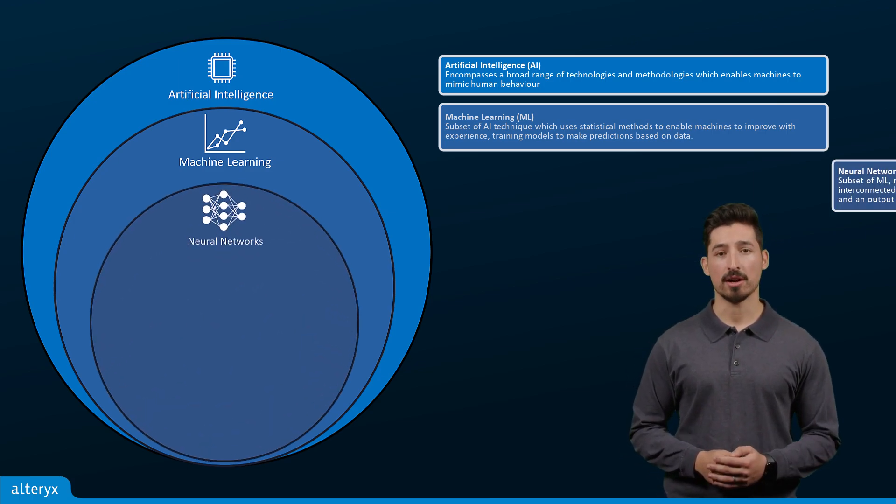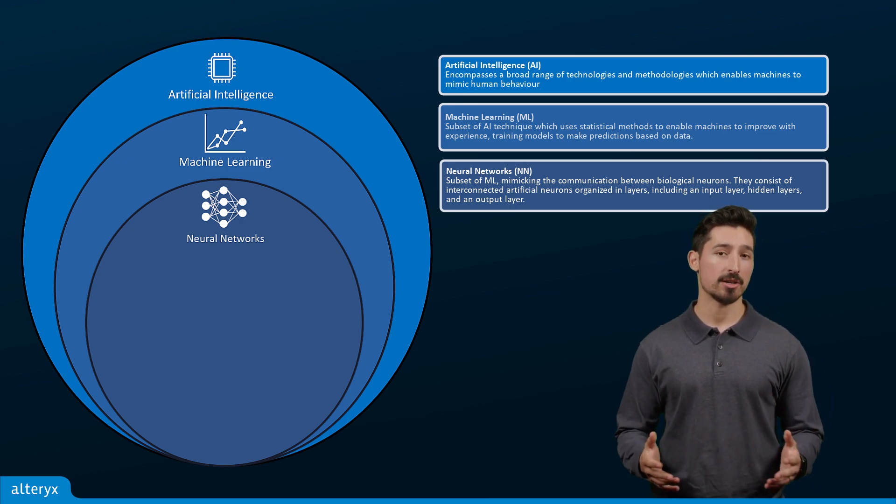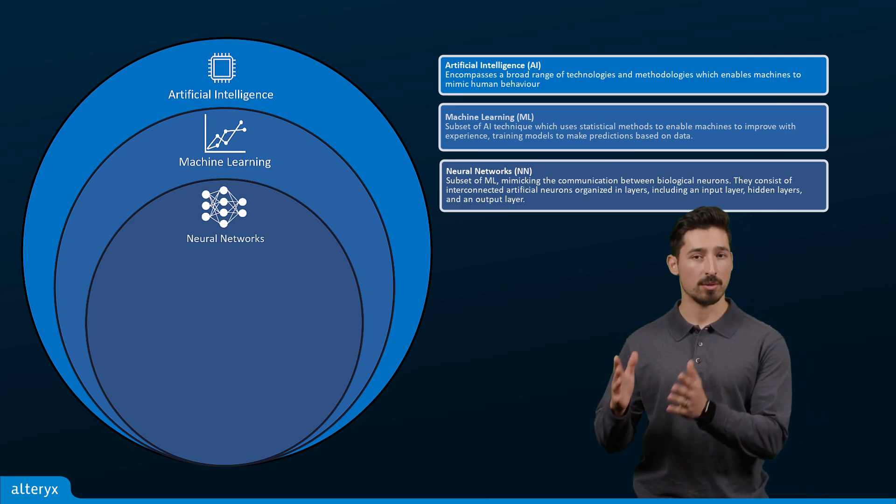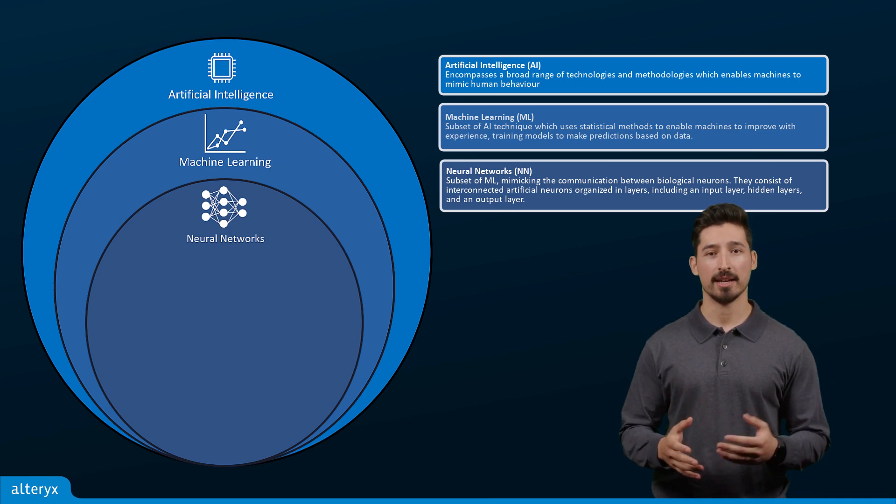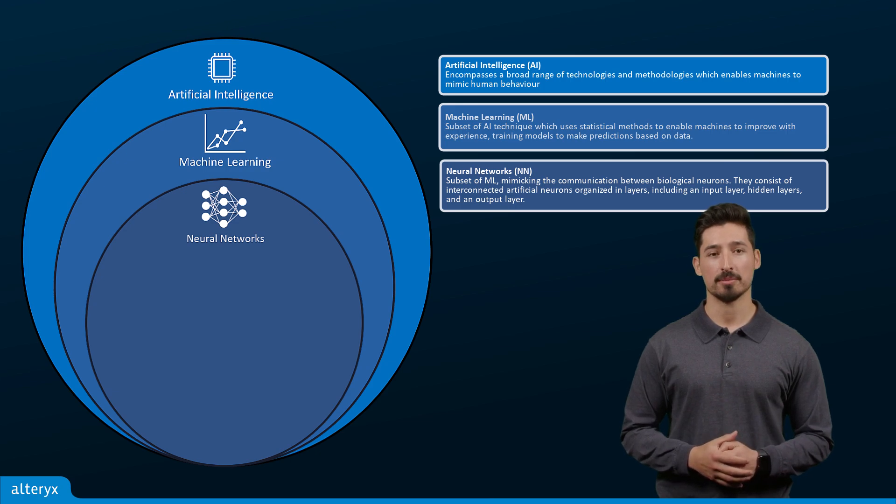Neural networks are a subset of machine learning, mimicking the communication between biological neurons. They consist of interconnected artificial neurons organized in layers, including an input layer, hidden layers, and an output layer. Neural networks are central to deep learning algorithms.